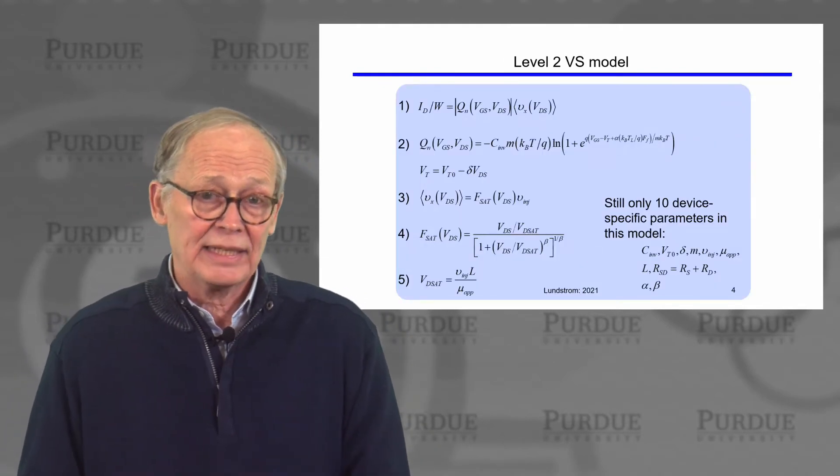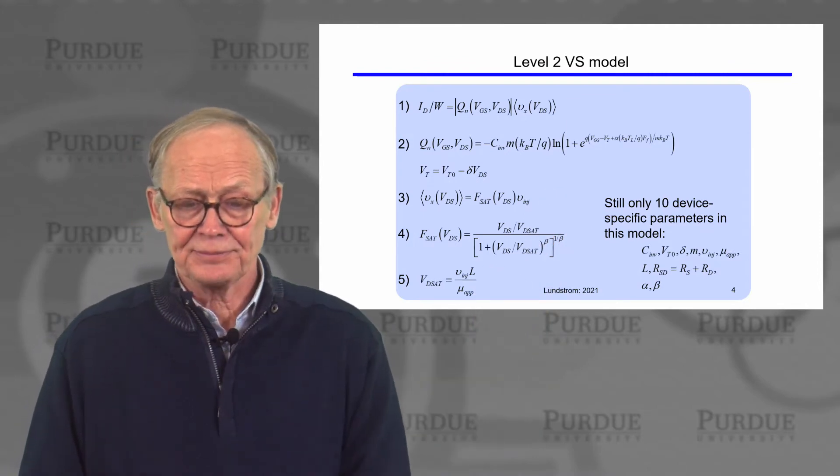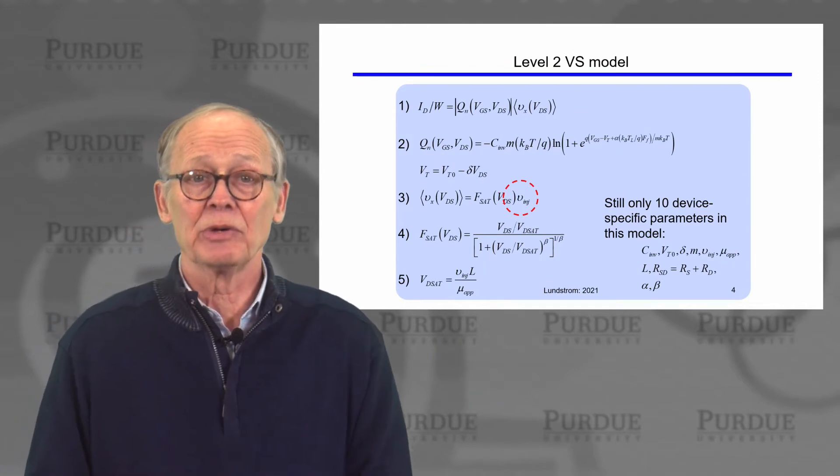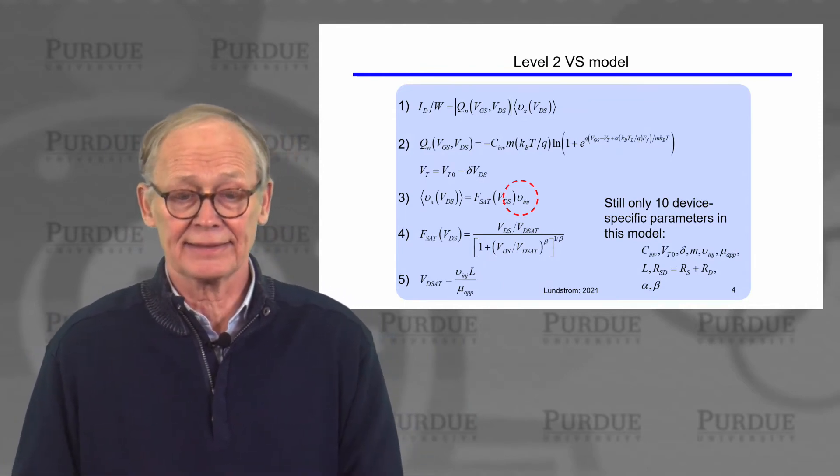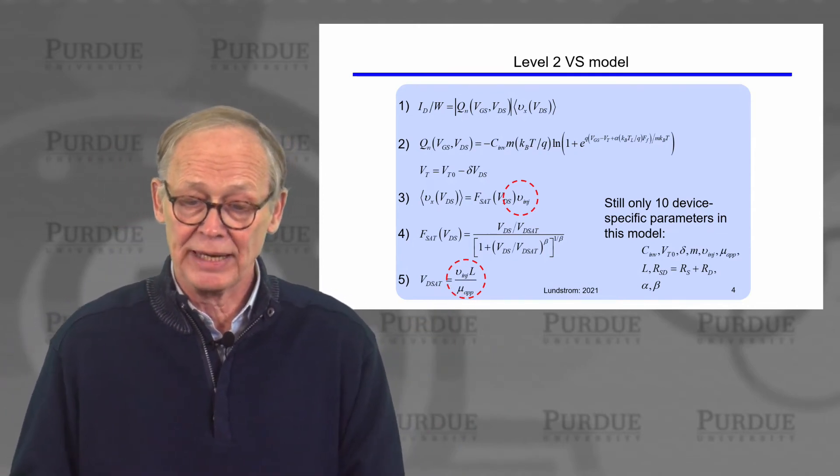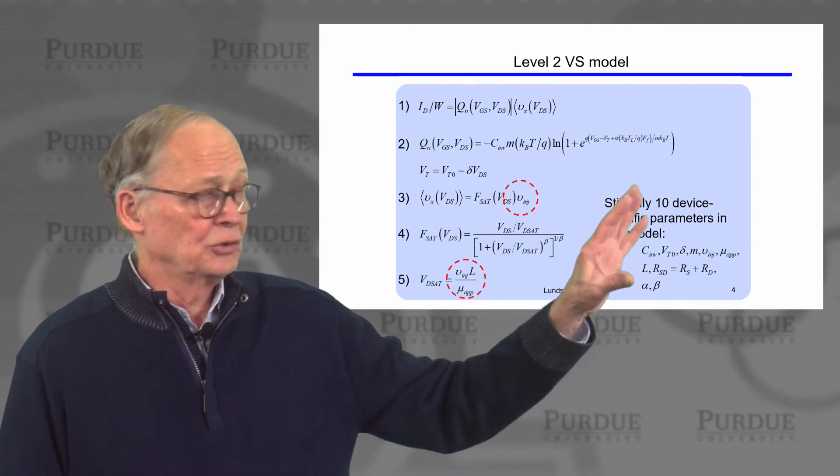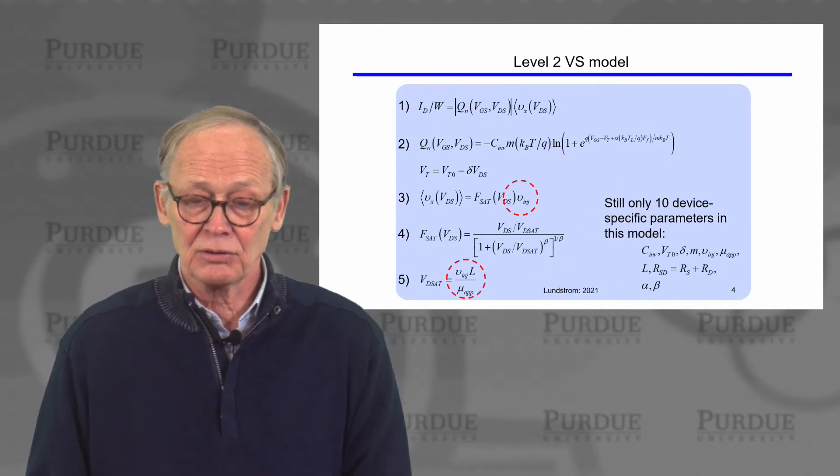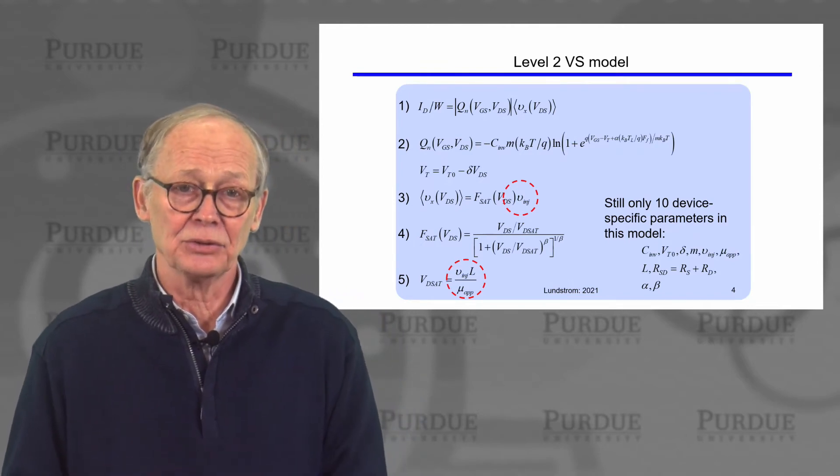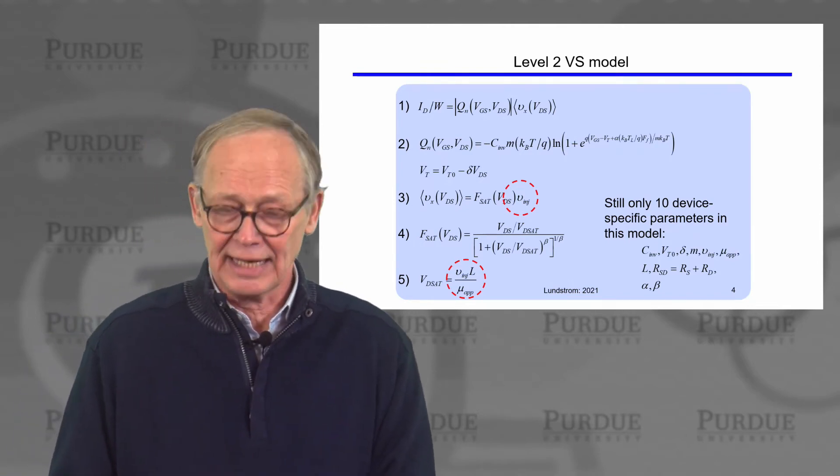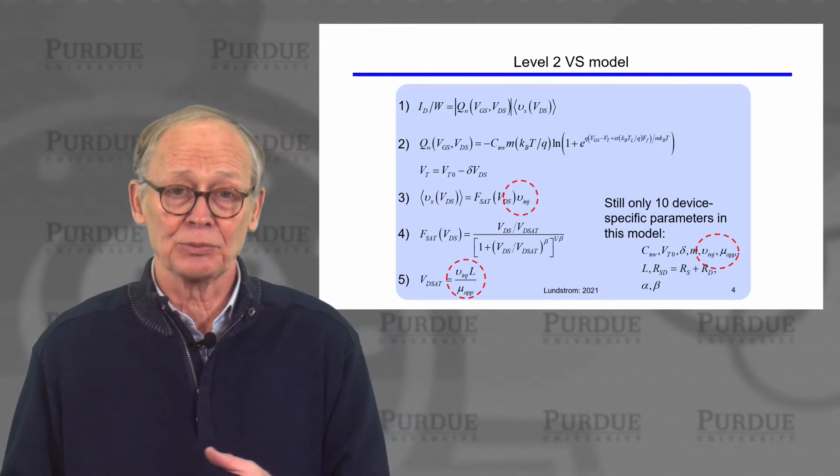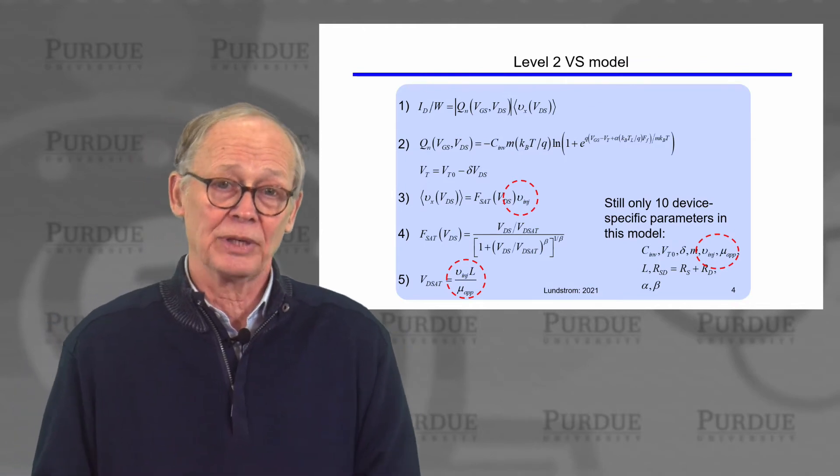We can easily now take our virtual source model and make two changes. Where we had a saturation velocity, we replace it by this injection velocity. Where we had a scattering limited mobility, we replace it by the apparent mobility. We've introduced no additional parameters. There are still only 10 parameters in this model, so that makes it easy to use and to fit to measured ID characteristics. No more parameters. We simply reinterpret two of the parameters that were already in this model.